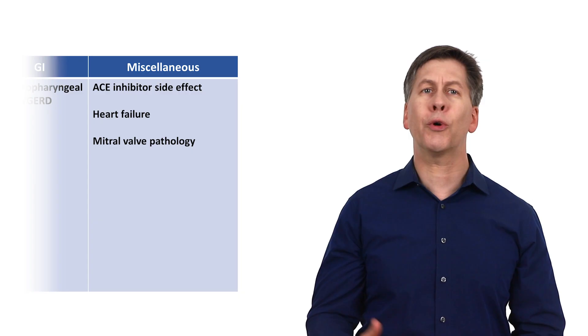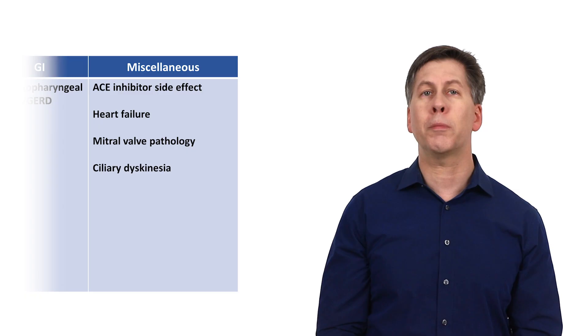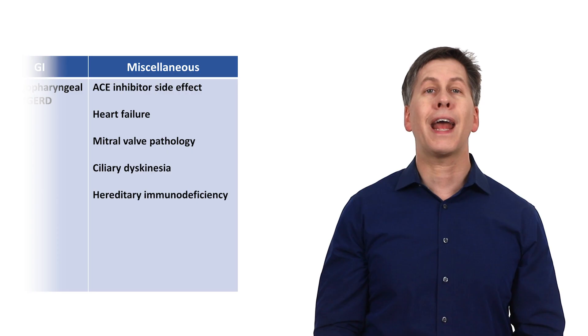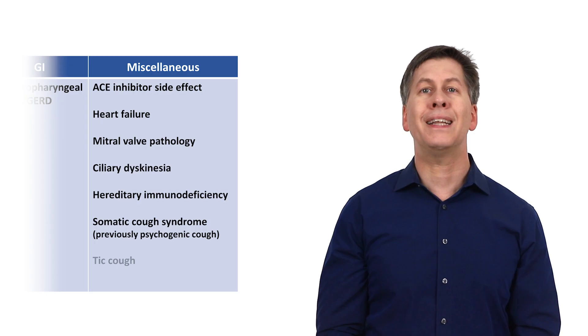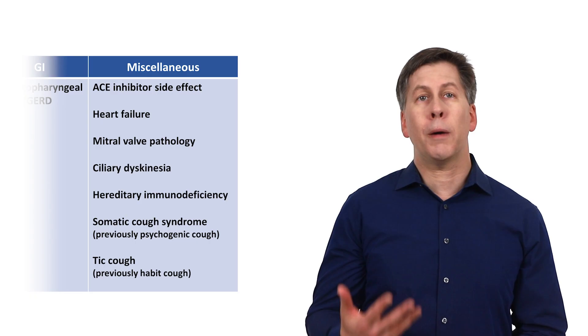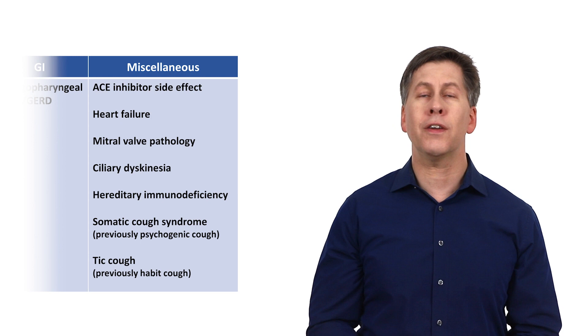The miscellaneous category also includes the genetic conditions of ciliary dyskinesia, in which the airways lack normal mucociliary clearance and a variety of hereditary immunodeficiencies. And last, we have somatic cough syndrome, previously known as psychogenic cough, and tick cough, previously known as habit cough. Unfortunately, as has already come up in this framework, there is also not a clear consensus on how these last two conditions are defined, diagnosed, or even distinguished from one another.